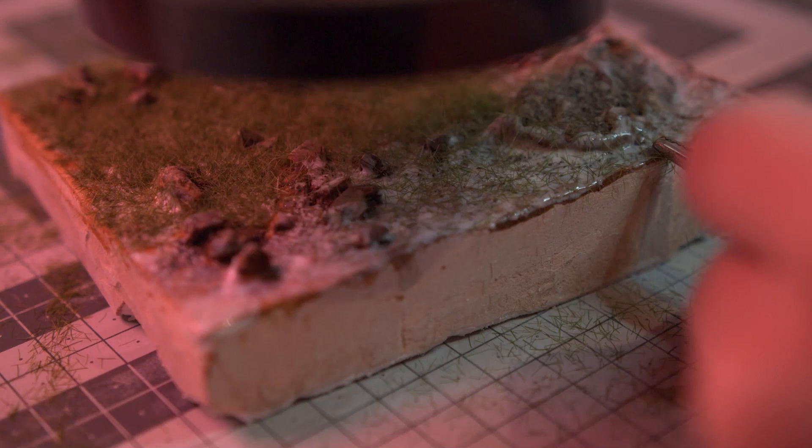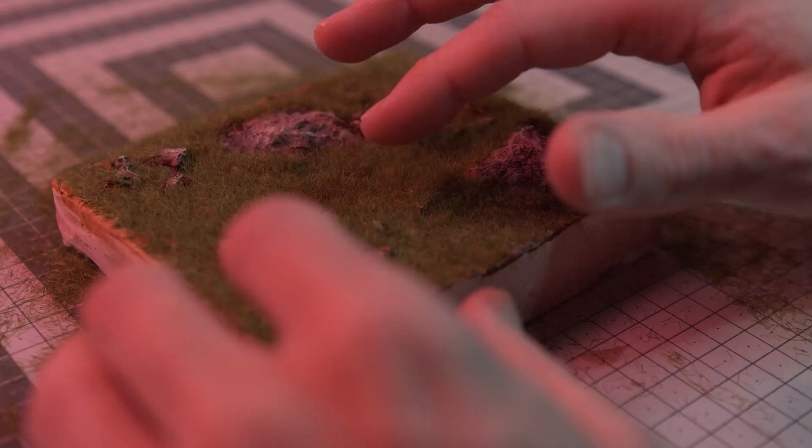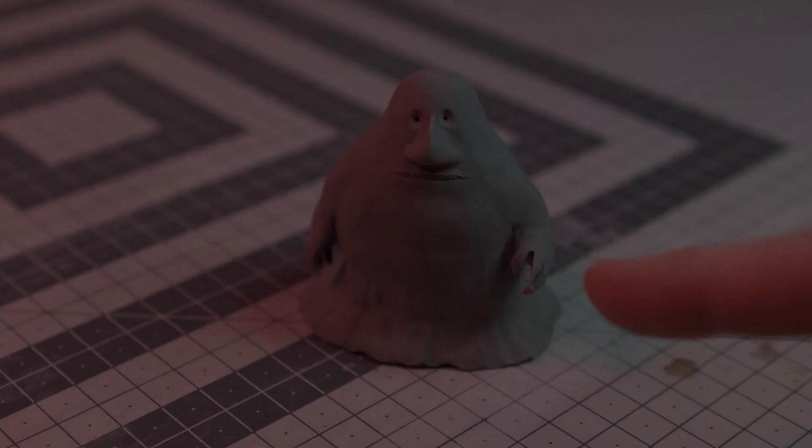Before the glue has had time to dry, I mess up the grass a little bit to make it look less like a football field. The model is baked and ready for a black primer.